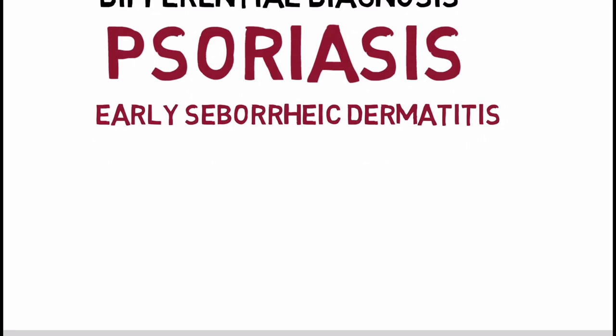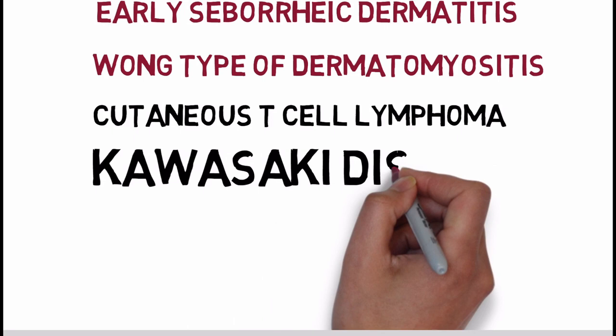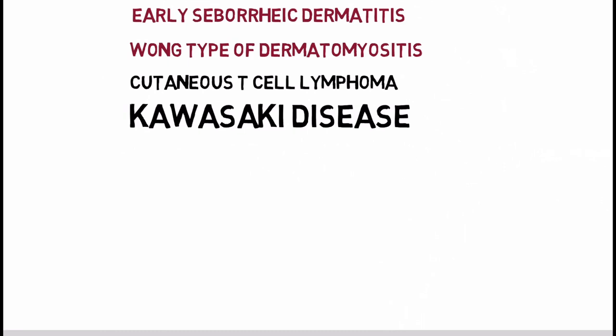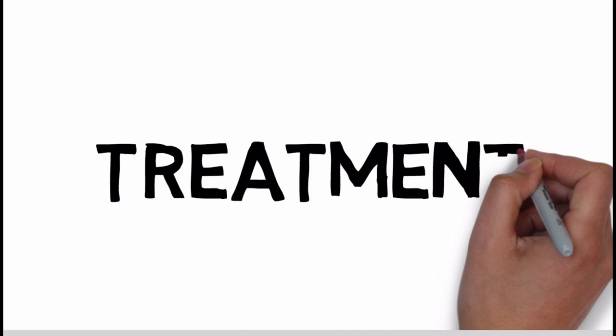Early Pityriasis Rubra Pilaris of the scalp can mimic seborrheic dermatitis, but as additional clinical features develop, the two can be distinguished. A PRP-like eruption can be seen in patients with Wong-type dermatomyositis and CTCL. Children with acute onset PRP can be misdiagnosed as having Kawasaki disease. Occasionally PRP is confused with progressive symmetric erythrokeratoderma. Other causes of erythroderma — such as CTCL, atopic dermatitis, psoriasis, and drug eruptions — should also be kept in mind.